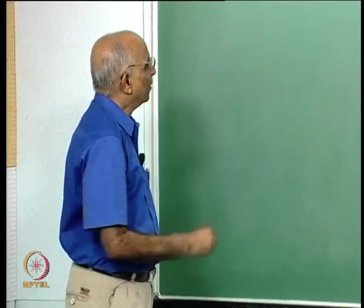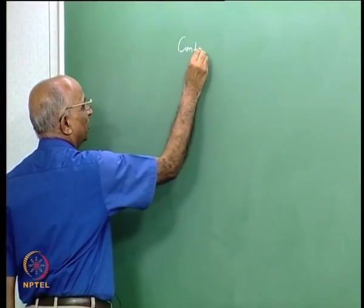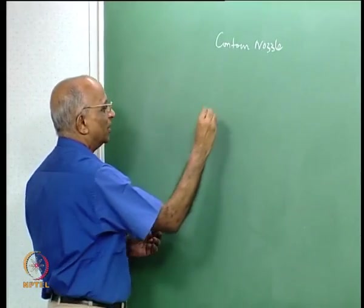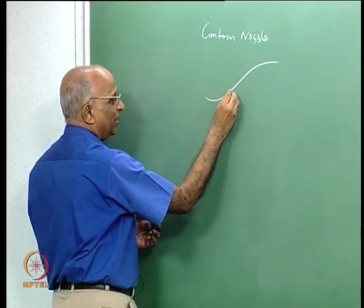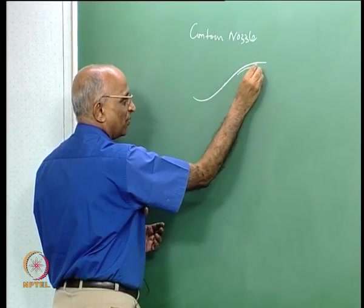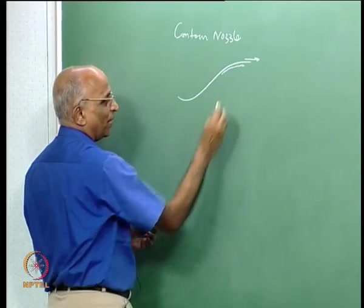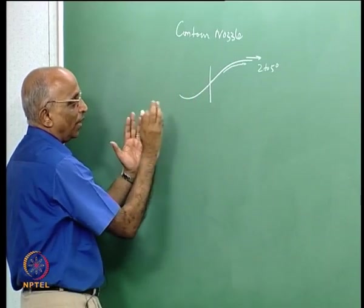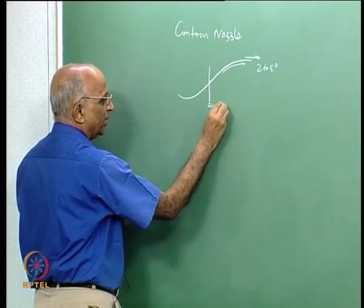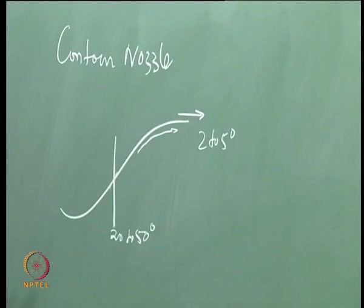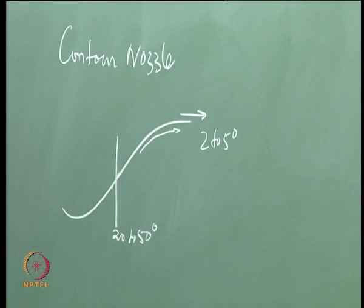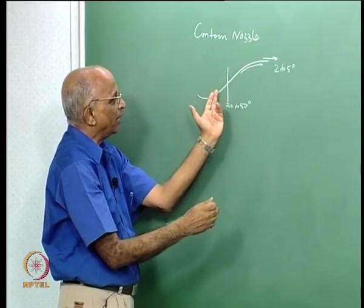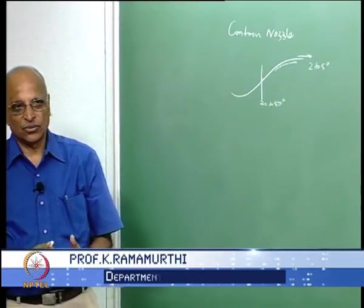Good morning. In the last class we talked about the contour nozzle. The shape of the contour nozzle is in the form of a bell. Initially you expand the flow at a larger angle and compress the flow later on such that you get a very small divergence angle, say between 2 to 5 degrees. Initially you expand the flow at a larger angle, say between 20 to 50 degrees, and the shape of this contour is something like a parabola — a second order parabola. This is how a contour nozzle looks.